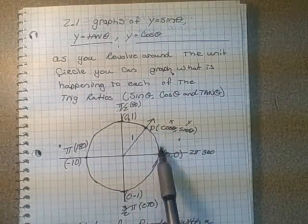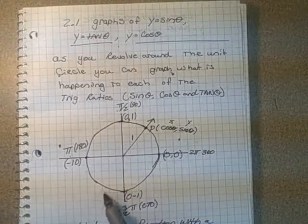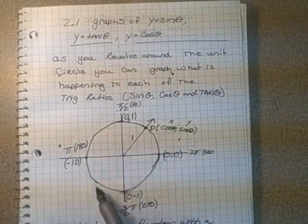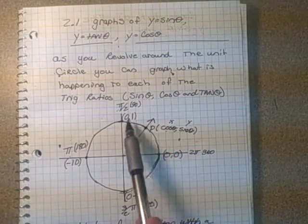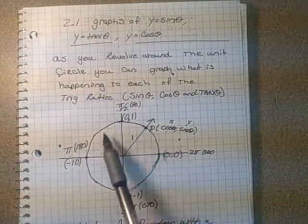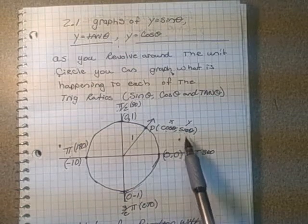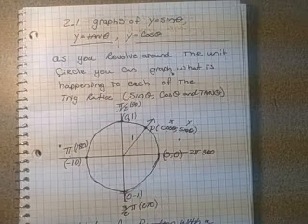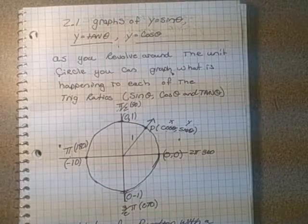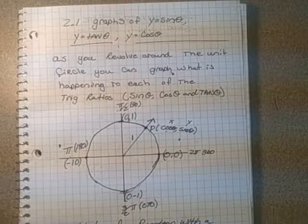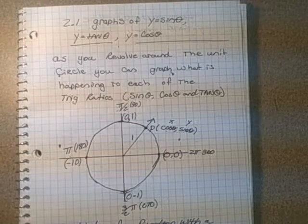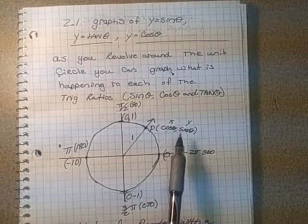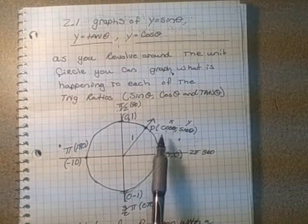You revolve around the circle and look at the cosine point to see what's happening as it goes around. One complete revolution is called a period. You can also look at sine. Finally, you can look at tangent, because tangent is sine over cosine. These are the three fundamental relationships in the unit circle.